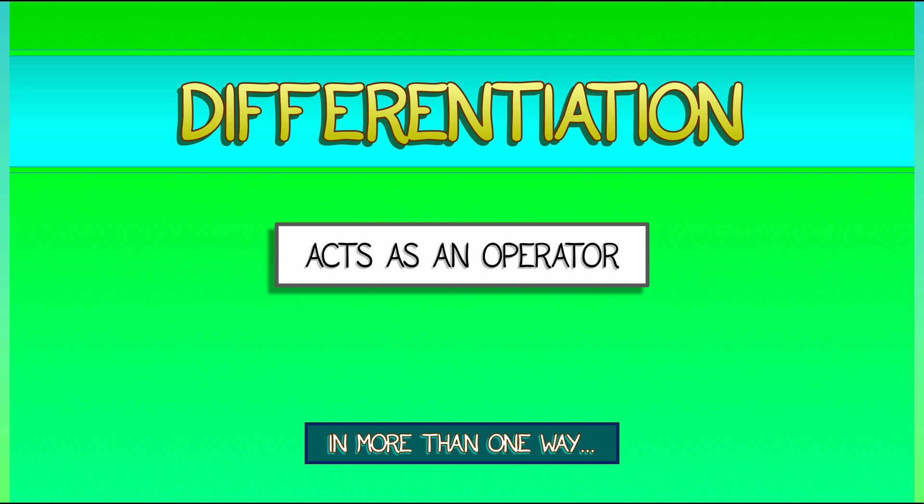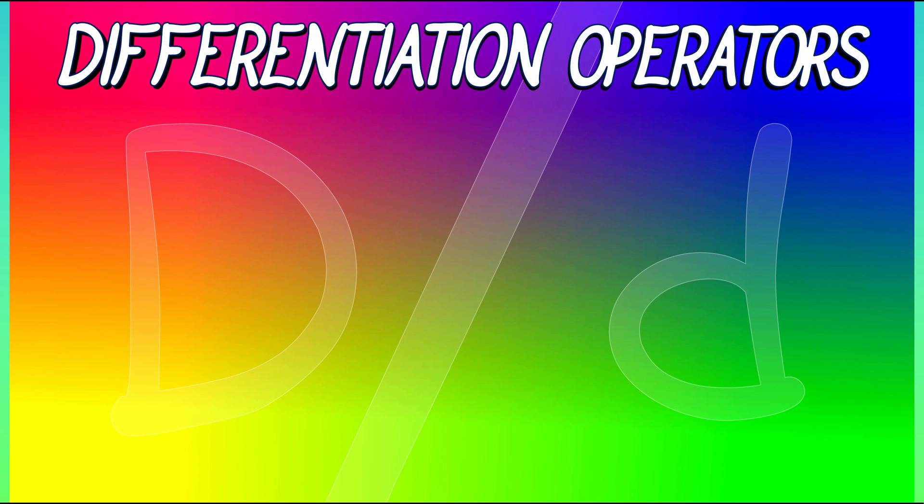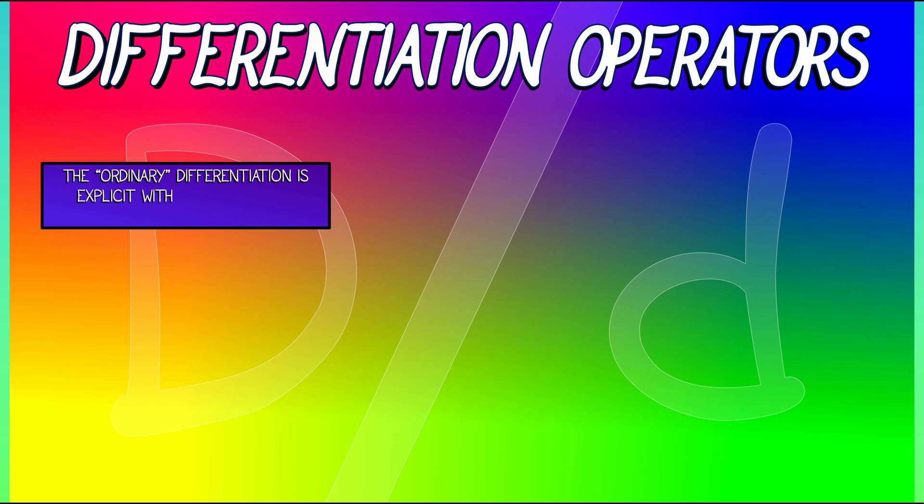There is more than one differentiation operator, and it's time to look a bit more carefully at the distinctions between them. Consider, first, the usual or ordinary differentiation of a function with respect to an explicit variable. Let's say you've got a function. It depends on x. We can consider differentiation with respect to x as an operator.